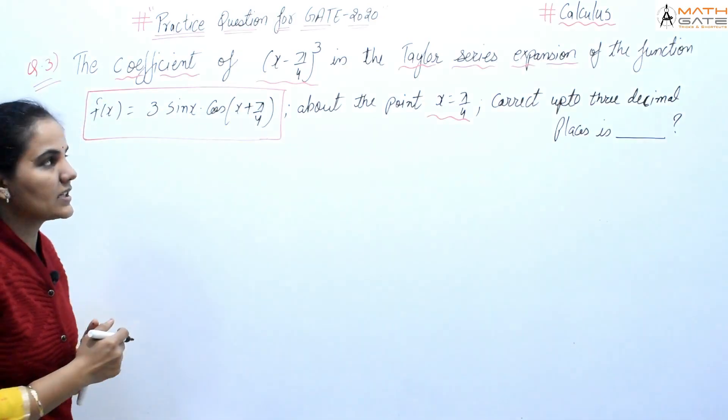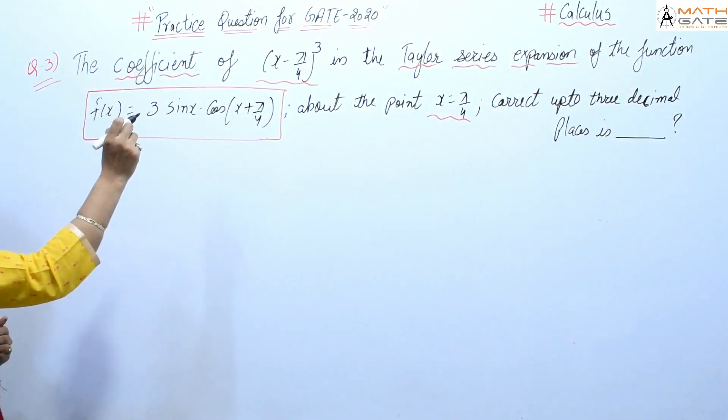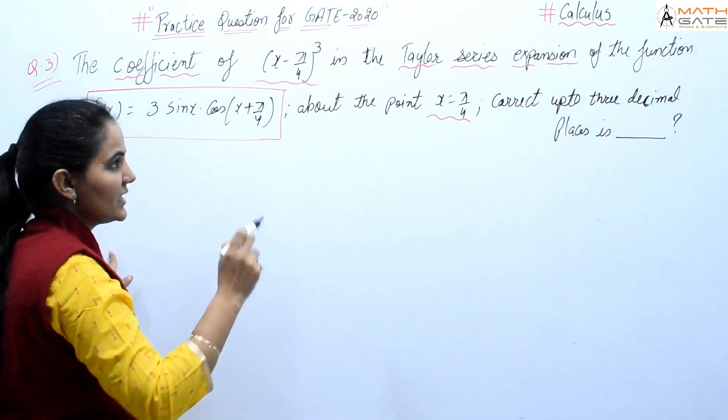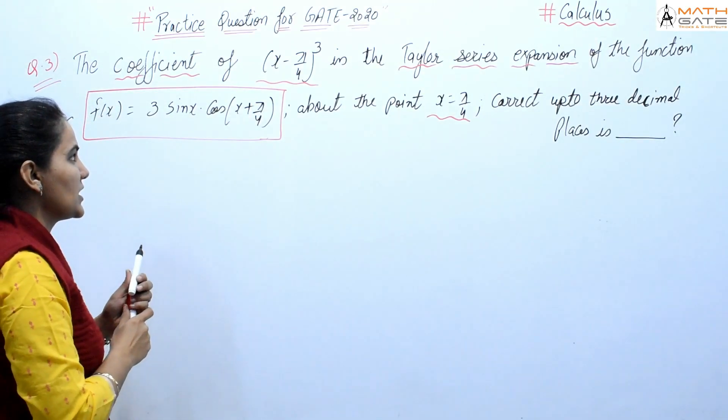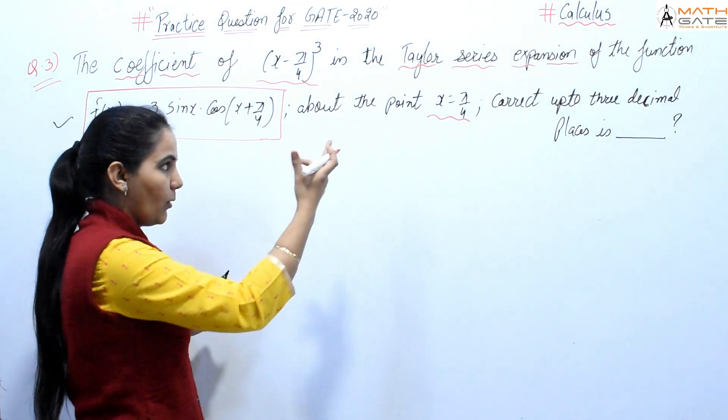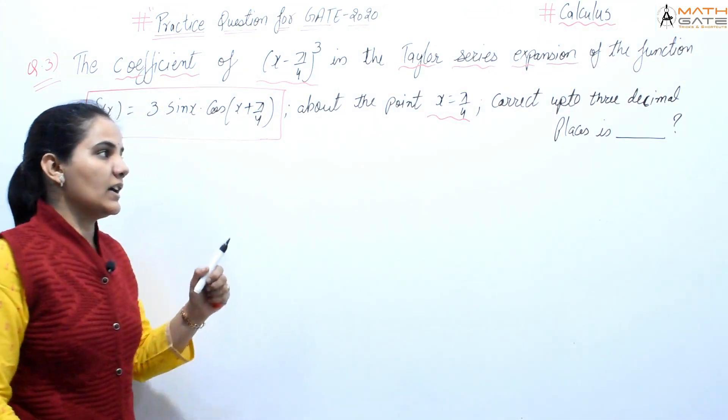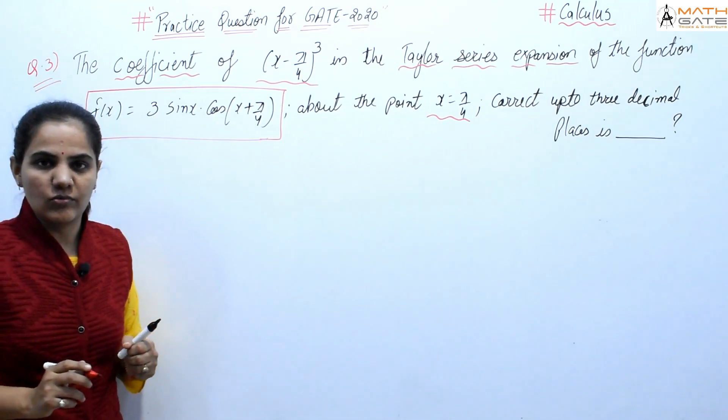The coefficient of (x - π/4)³ in the Taylor series expansion of the function f(x) = 3sin(x)cos(x + π/4) about the point x = π/4, correct up to 3 decimal places.